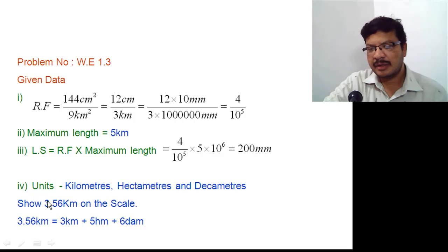The value to be marked on the scale is 3.56 km. The meaning of 3.56 km is 3 km, 5 hectometers and 6 decameters.